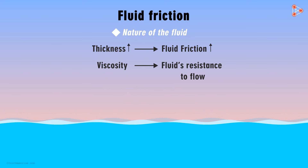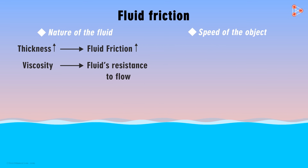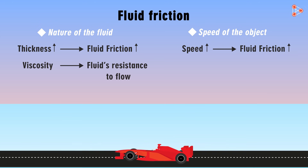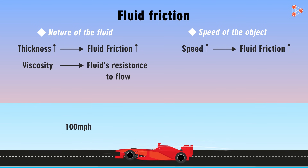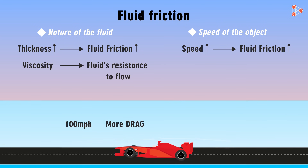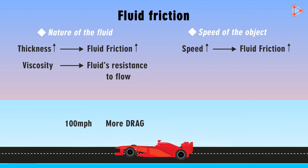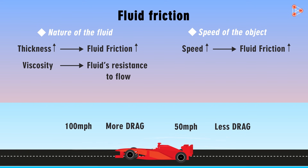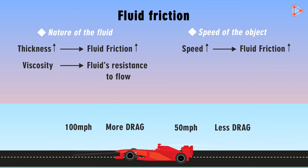Can you think of any other factor? Another factor is the speed with which the object is travelling. Higher the speed of the object moving through a fluid, greater will be the frictional force acting on it. A vehicle travelling at 100 miles per hour will face more drag from air compared to a similar vehicle travelling at 50 miles per hour.